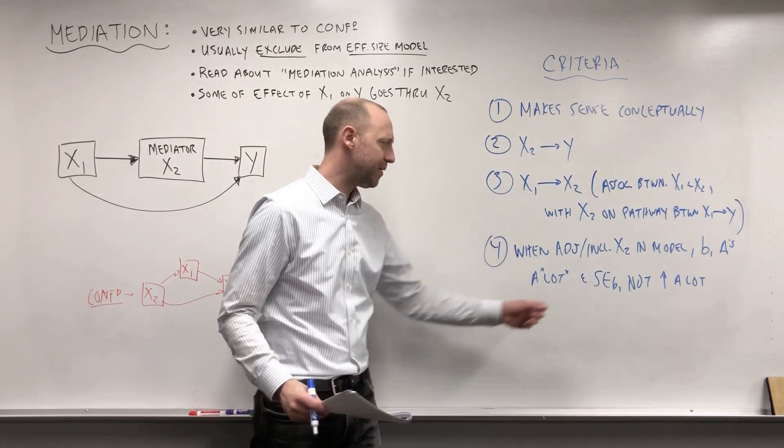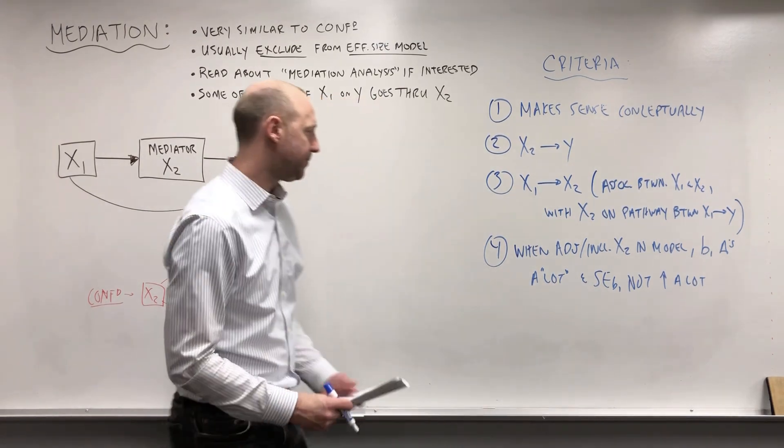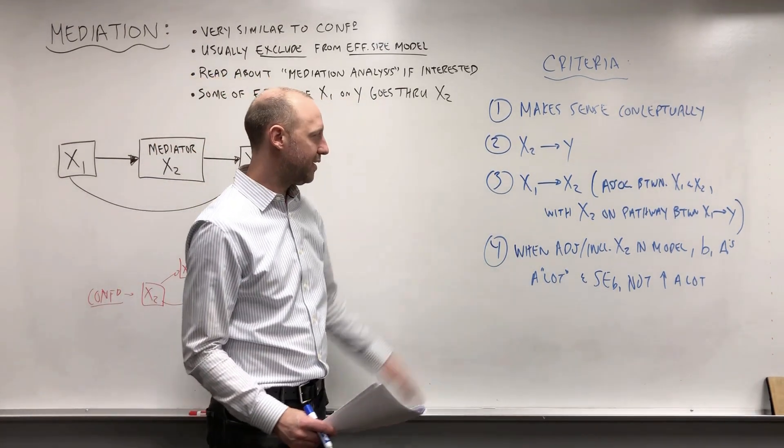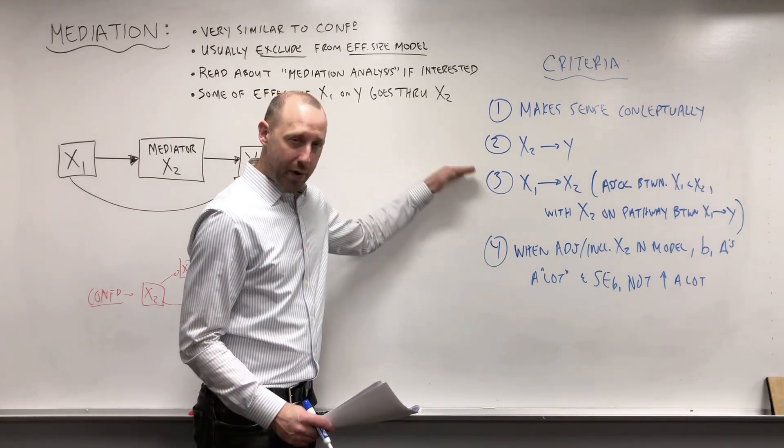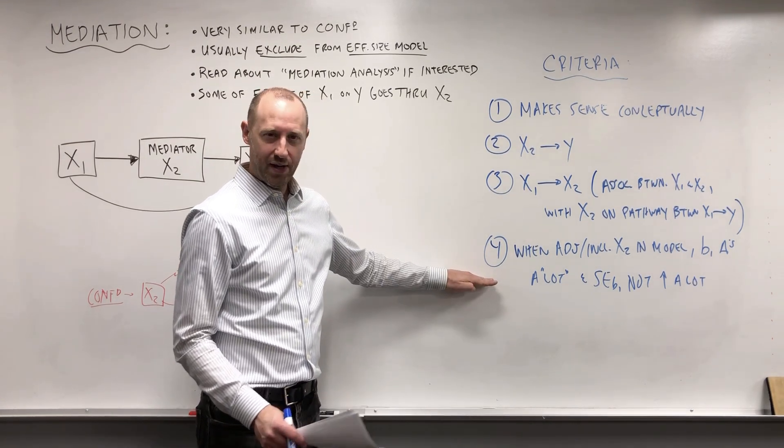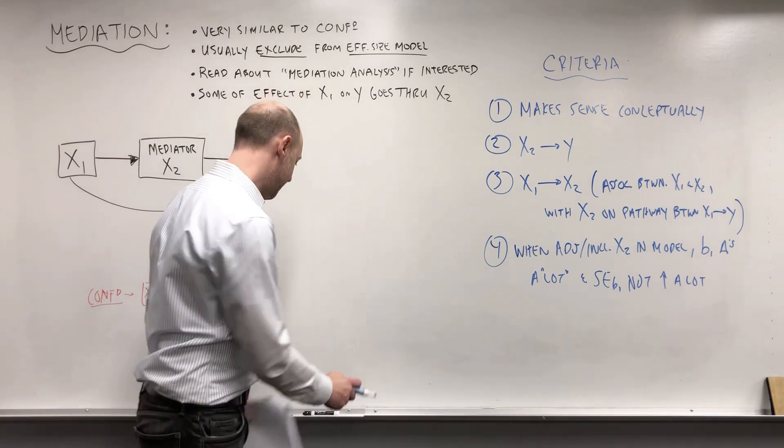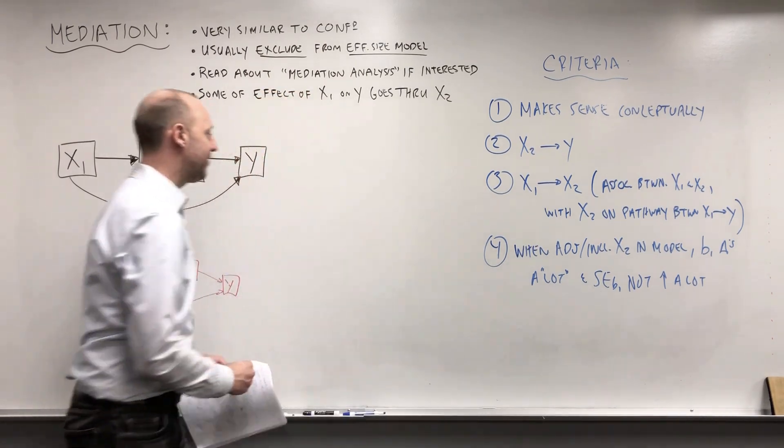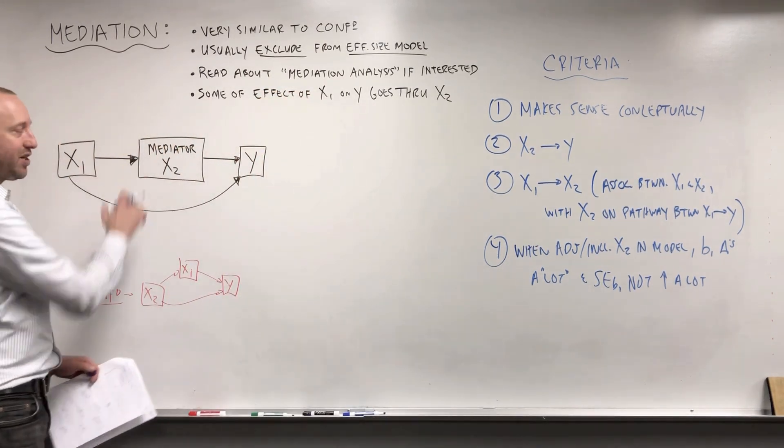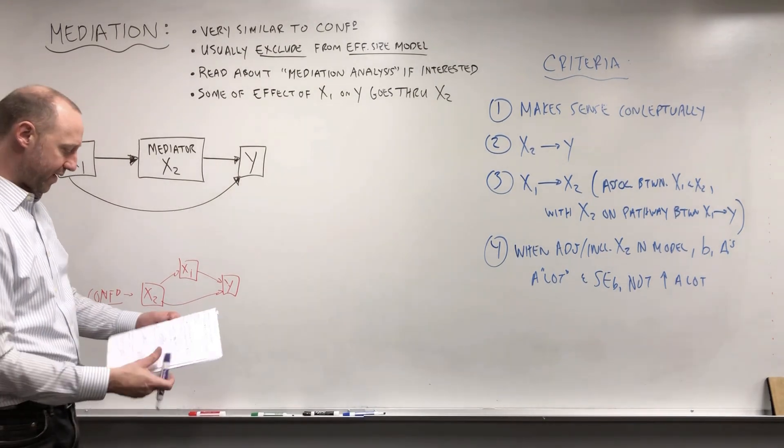It increases a little bit, stays the same, or decreases a bit. So what I want to point out is that numerically a mediator and a confounder are going to behave identically. The main difference is the association between x1 and x2 and our understanding of that.